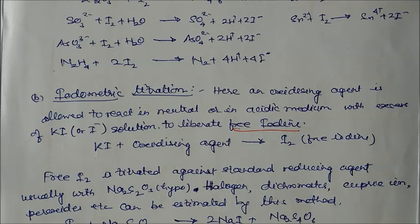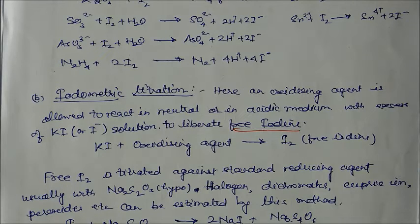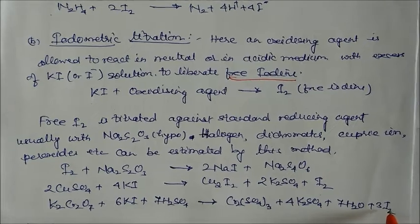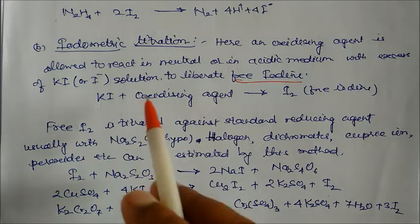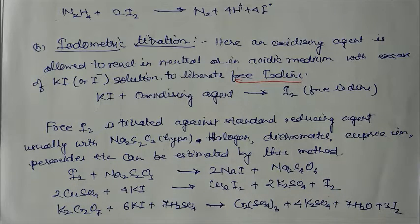This free iodine obtained from potassium iodide after reaction with an oxidizing agent is titrated with hypo. For example, copper sulfate reacts with KI to give iodine, which is then titrated with hypo. Similarly, potassium dichromate reacts with KI to give I₂, which is again titrated with hypo. These two methods — iodimetric and iodometric — are different; iodometric uses an indirect way of generating iodine.